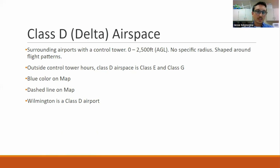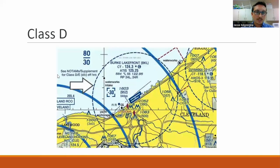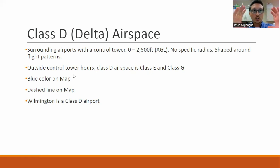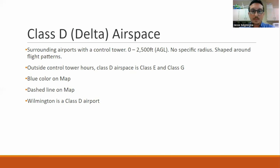Outside control tower hours is an important question you'll find on the Part 107. Class Delta airspace turns into class E and class G airspace when the tower closes. I've seen people get this wrong and just say G — it turns into Echo and Golf. When the control tower closes down at night, it's no longer Delta airspace — it's now Echo and Golf. Usually it's Golf from the ground up to about 700 feet, and then from 700 feet AGL upward it will be Echo airspace.